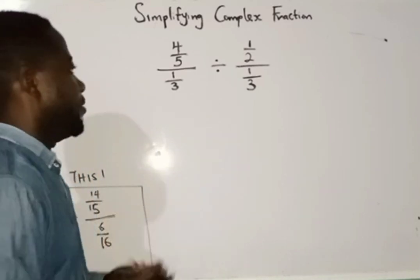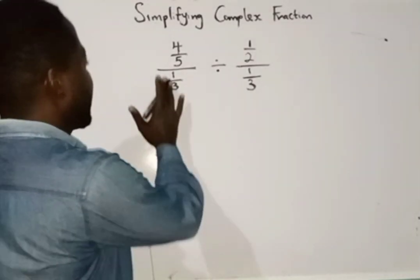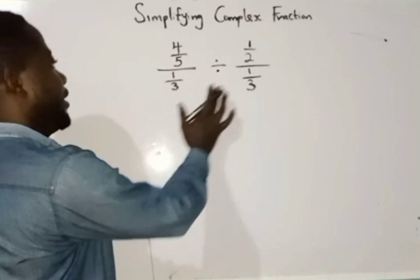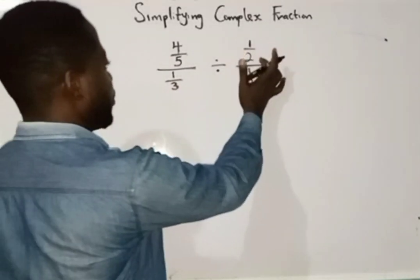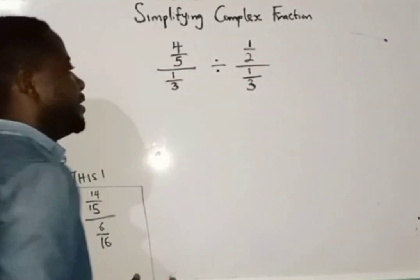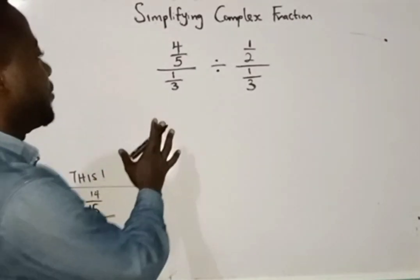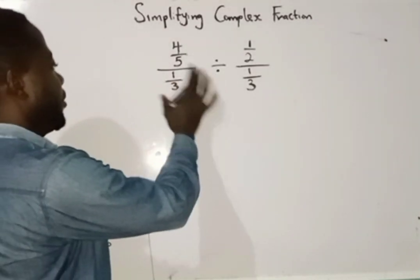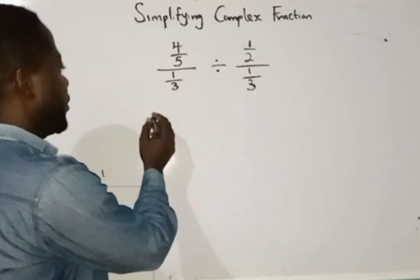So we want to simplify this complex fraction. As you can see we have 4 over 5 divided by 1 over 3 divided by 1 over 2 all over 1 over 3. This involves division of fractions.